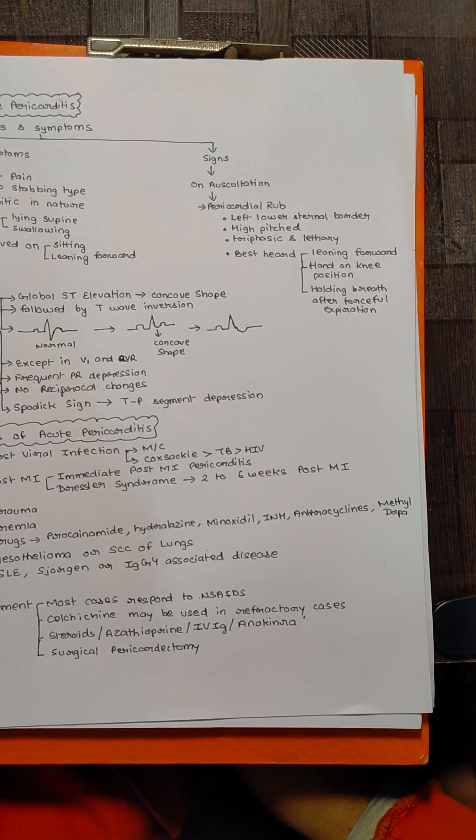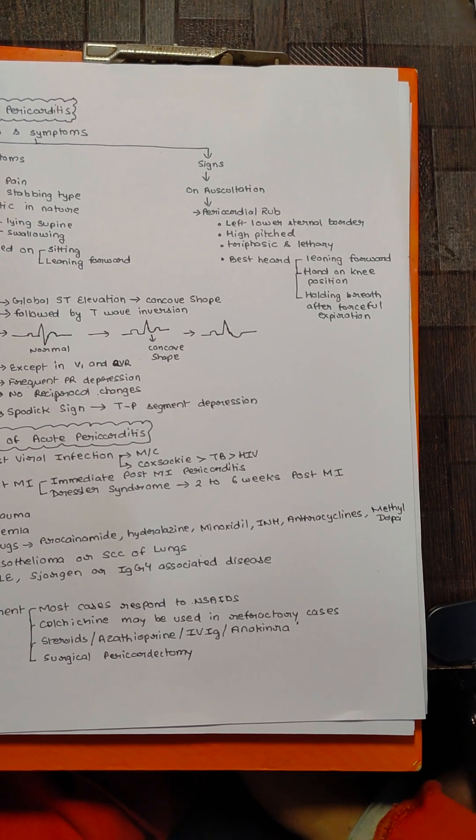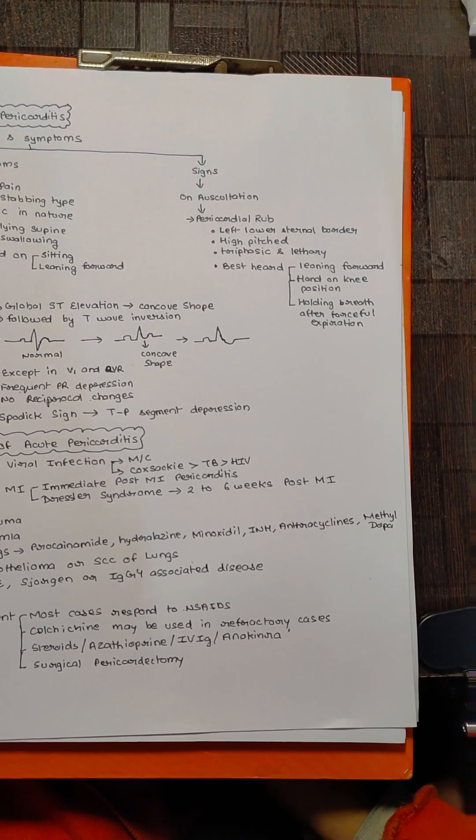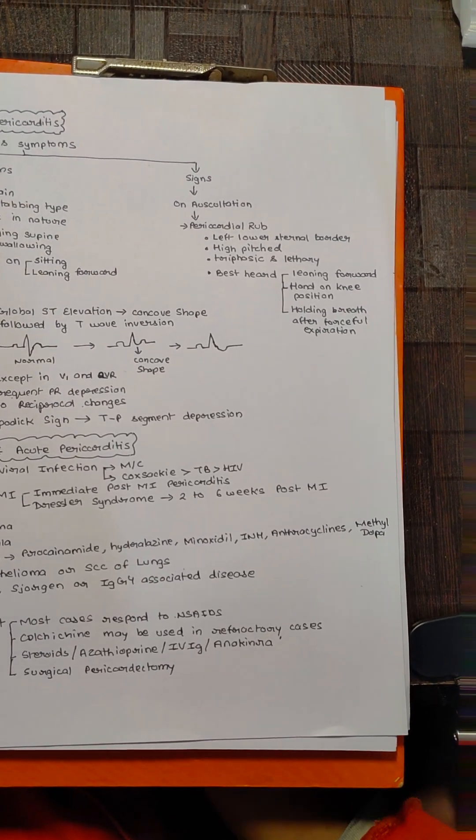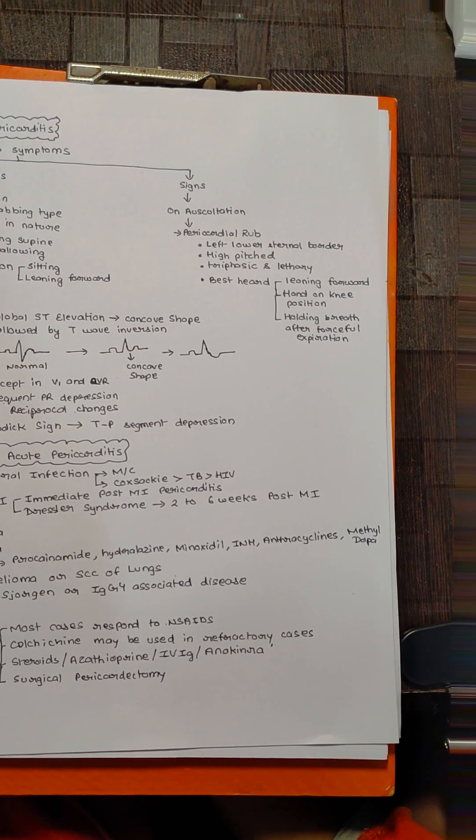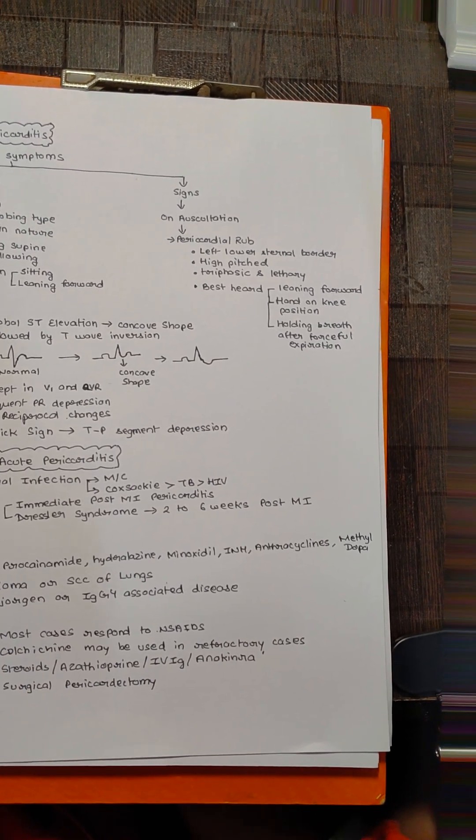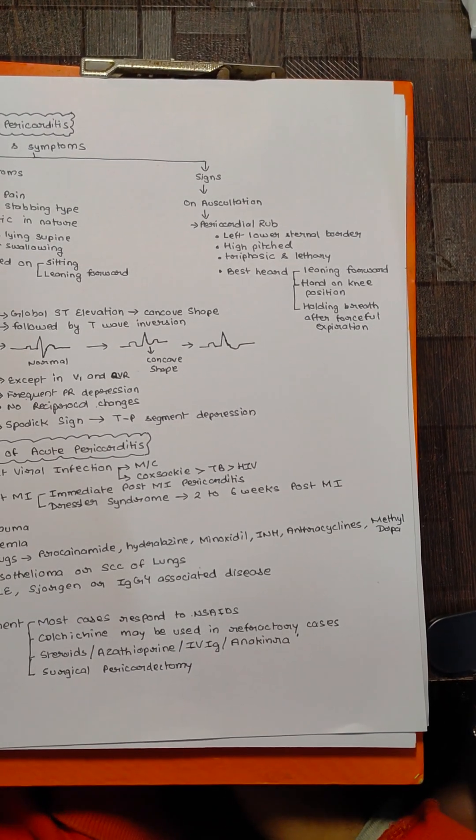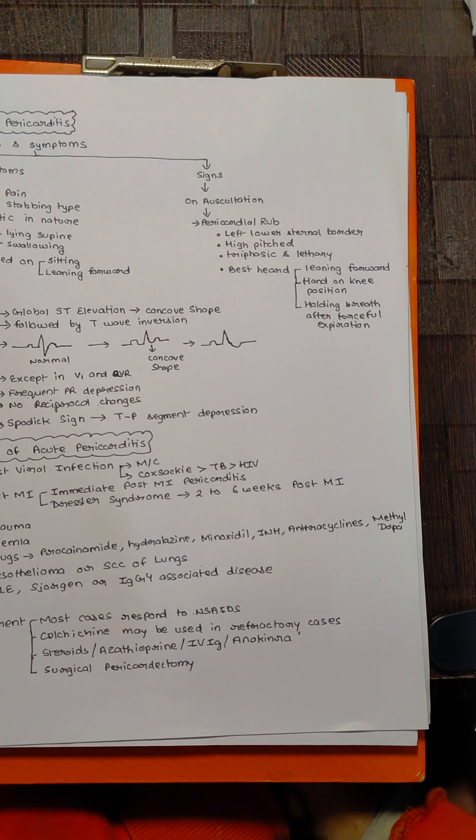The pain that the patient is having will increase on lying down supine and increase on swallowing, whereas it will be relieved when the patient is leaning forward or sitting. What exactly are the signs? When you auscultate the patient, you will be able to hear a pericardial rub.